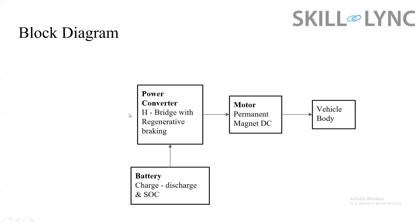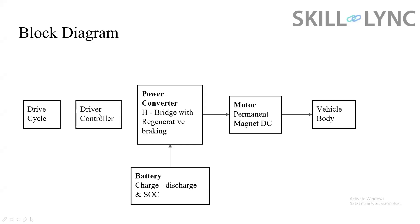Now we want to simulate this situation and run this model for a given input. We need a throttle and a brake pedal, and that is nothing but the drive cycle input. If you decide at what speed you want to run your vehicle, you give the drive cycle input — that is the desired speed. There is also a driver controller which tracks the actual speed of the vehicle and matches it with the given input.